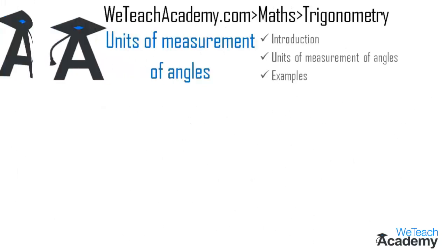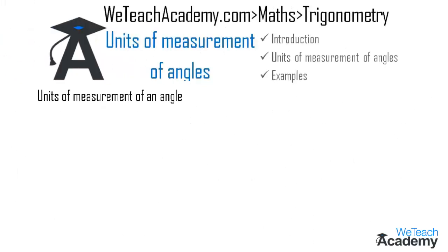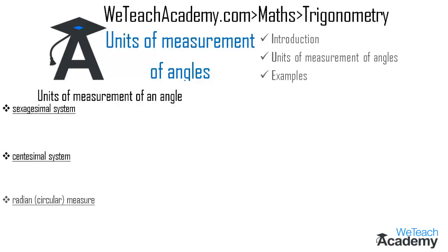Now let us discuss units of measurement of angles. These are discussed under three known systems: the sexagesimal system, the centesimal system, and the radian or circular system.